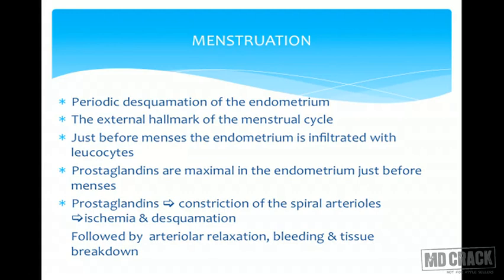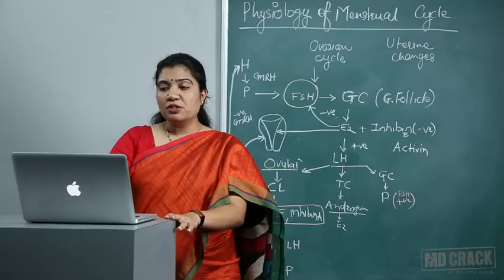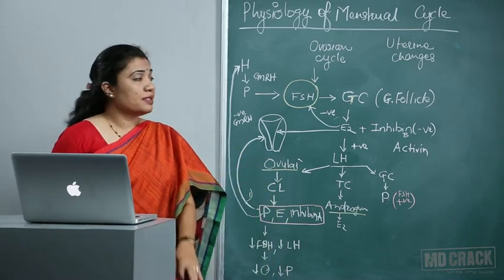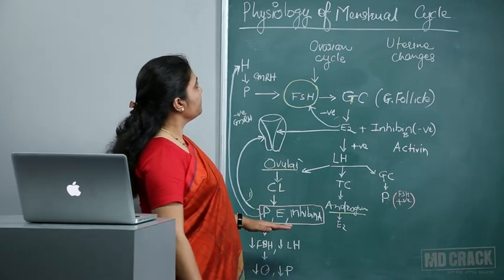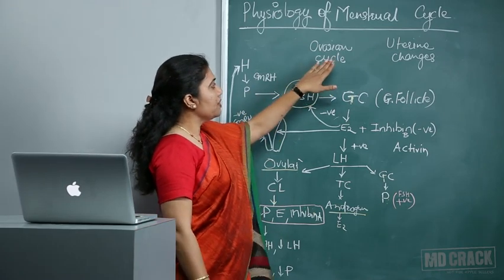Just before menses the endometrium is infiltrated with leukocytes. Prostaglandins are maximal in the endometrium just before menses. Prostaglandins lead to vasoconstriction of the spiral arterioles, causing ischemia and desquamation. Then once shedding starts, there is relaxation of the arteries after vasoconstriction, leading to bleeding. The blood and desquamated tissue come out as menstrual blood.